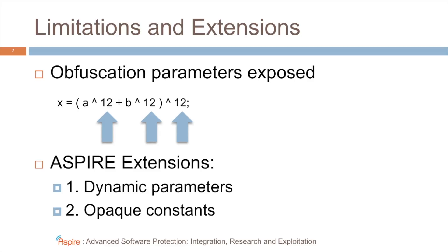So in ASPIRE, the team at Fondazione Bruno Kessler researched two extensions. One is to use dynamic parameters that change from one execution of the program to another. And the other is to use opaque constants that are not visible in the code.